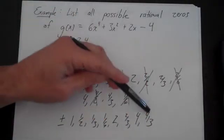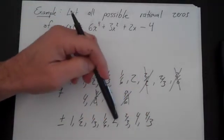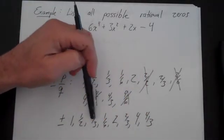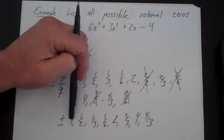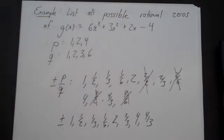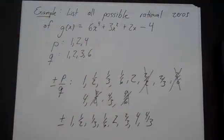That gives us 8 unique values, and with plus or minus that's 16 possible candidates for a rational zero.